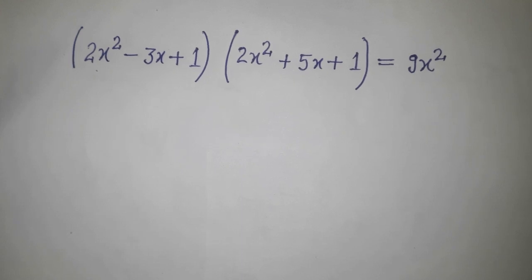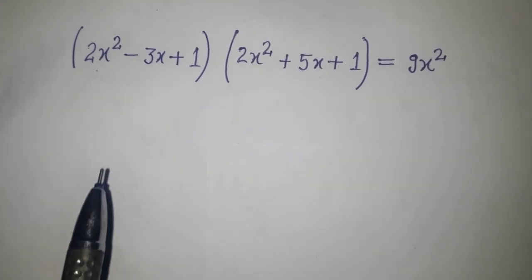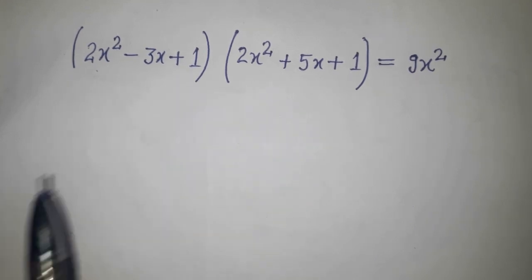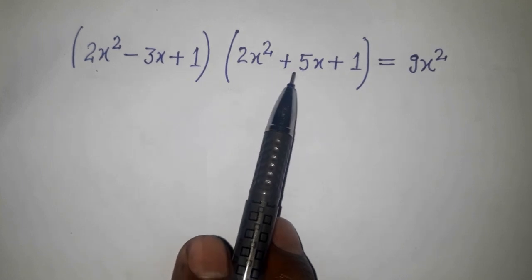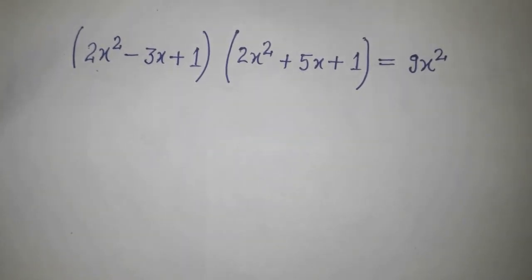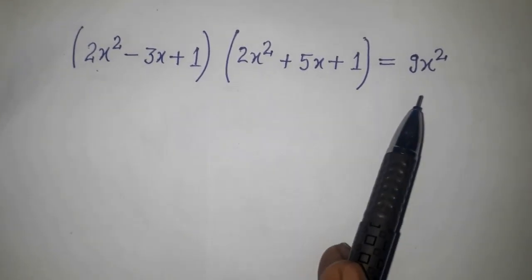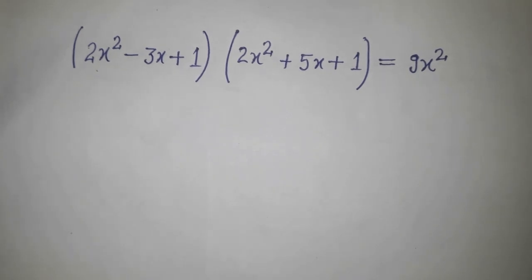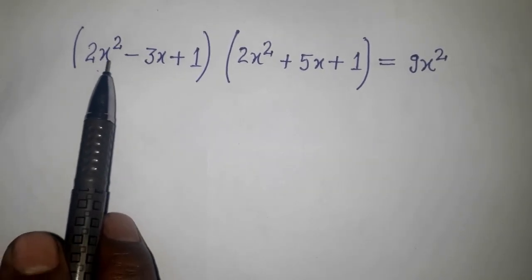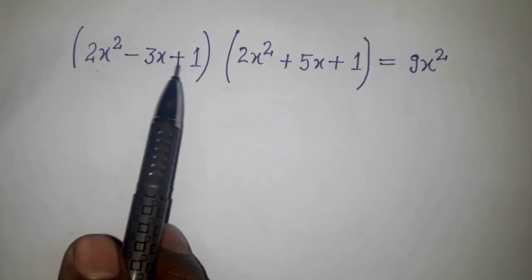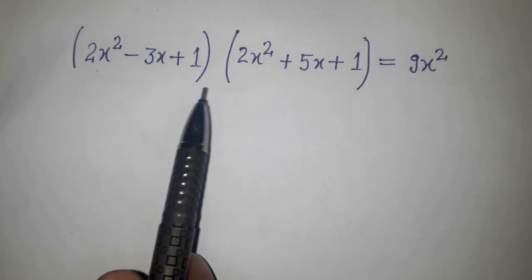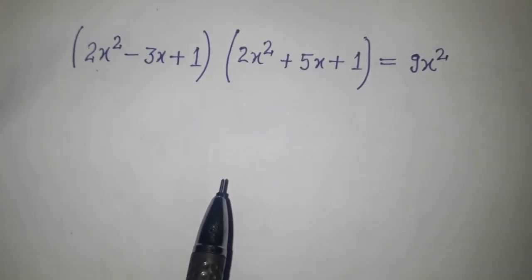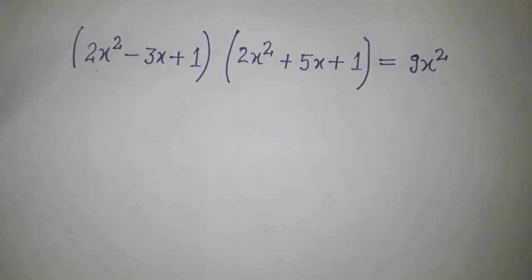You can see 2x² + 1 appears in both brackets. But if you try to take 2x² + 1 common from both, that will be a problem to solve. Similarly, substituting 2x² + 1 as a single variable will also create a problem. So the question is: how can we proceed?